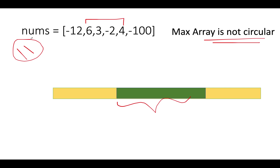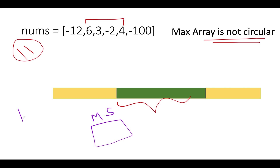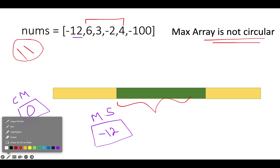This is what we need to identify, using the same principle as we have done in the Maximum Subarray problem. Let's start the iteration over this example and identify the maximum sum subarray. We will create two variables: one for storing the answer which is the maximum sum subarray result, and another for the current maximum running sum seen so far. Let's call it cm, initialized to 0, and maximum sum initialized to the first element.